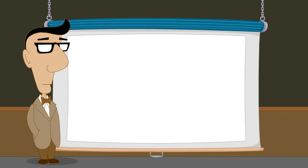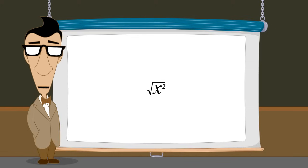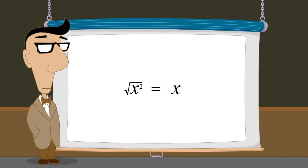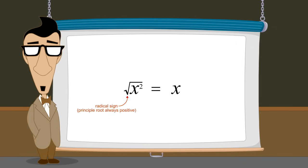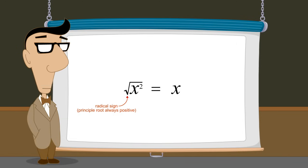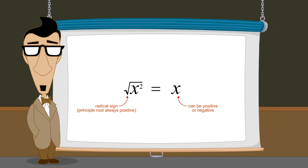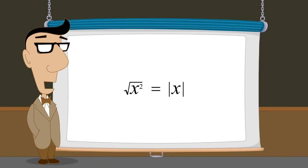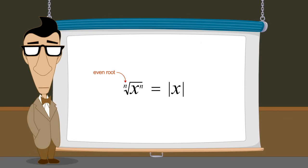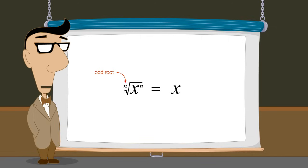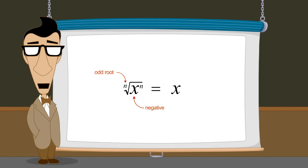Sometimes the roots of expressions involving variables can be simplified. For example, the square root of x squared is obviously x. But remember that the radical sign implies the principal square root, which is always positive, and the value of the variable can be positive or negative. Therefore, when bringing a variable out from under a square root sign, we must force the result to be positive by writing the absolute value of the variable. This is true for square roots, fourth roots, or any even root. However, we do not have to take the absolute value for odd roots, because with odd roots, a positive variable gives a positive result and a negative variable gives a negative result.